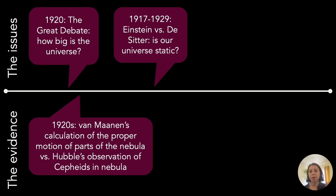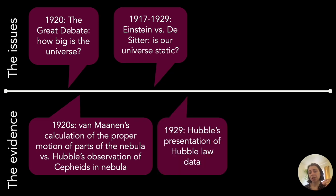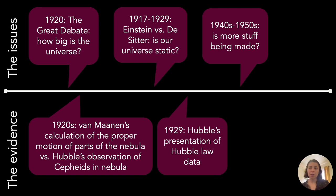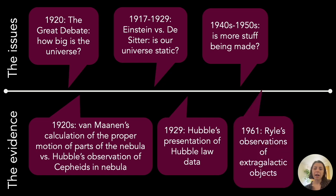Hubble's presentation of what's since been called the Hubble law data is going to bear upon the static universe issue and resolve it, at least for some cosmologists. Then in the 40s and 50s there was another episode in which the Big Bang model was being compared to what was called the steady state model. The question there was: is more stuff being made in the universe, or do we have a set amount of stuff distributed throughout it? The evidence bearing on that debate was Ryle's observations of extragalactic objects.